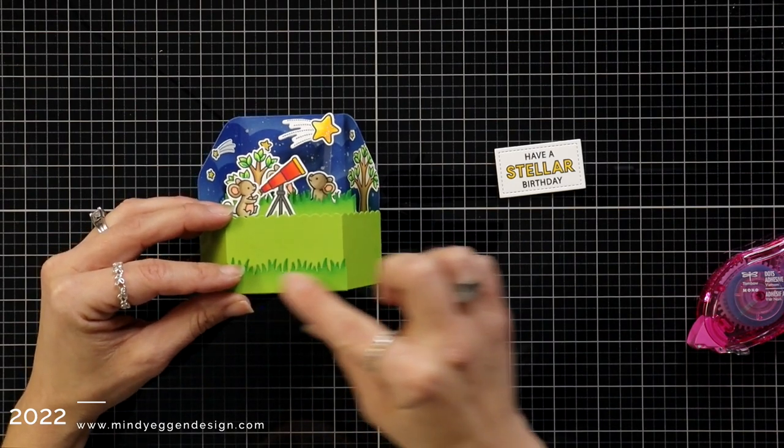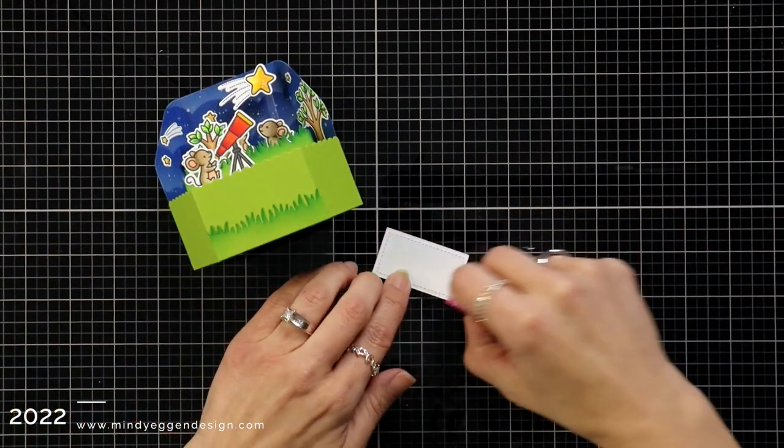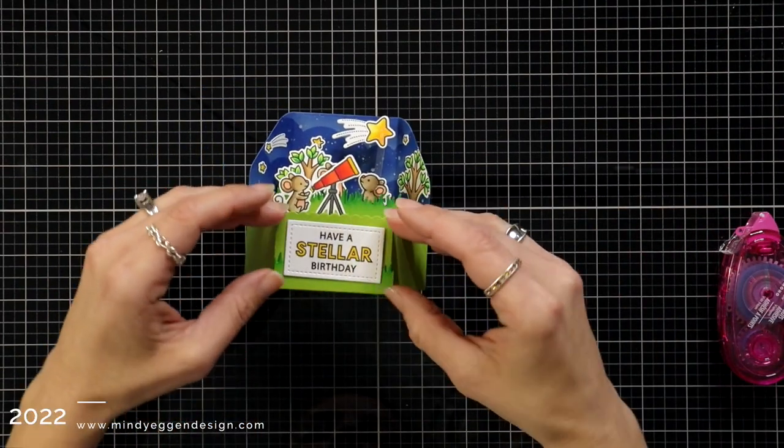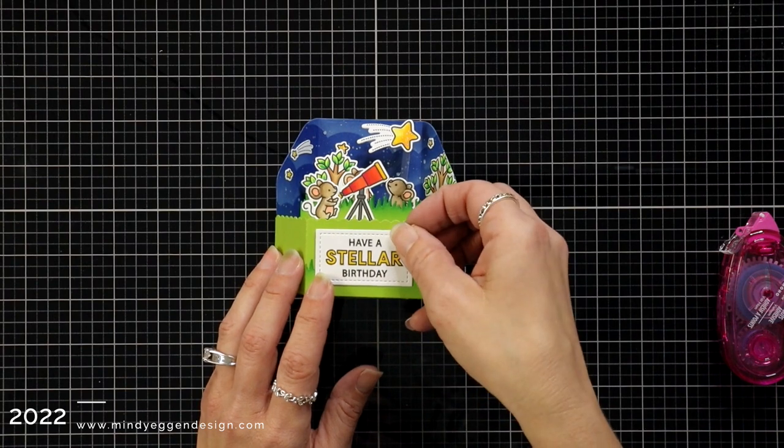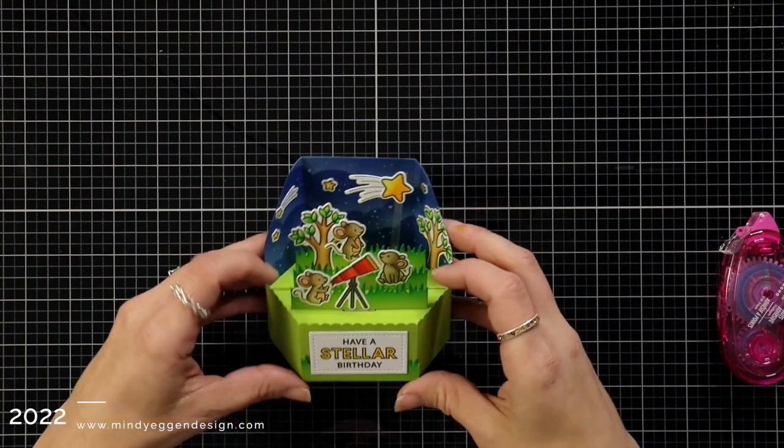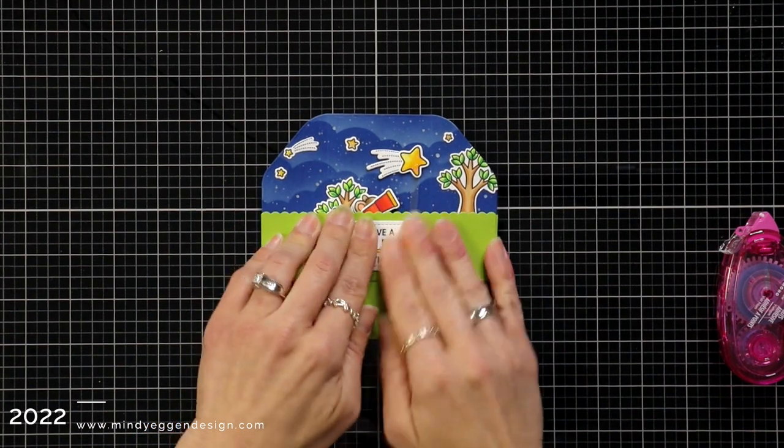This is that extra piece I had die cut and added to the front. I think it's super cute, but then once I added my sentiment with my tape runner, it kind of got covered up. But oh well, I'm leaving it. I added that tape runner and I'm going to just fold this back up so that I can push down that sentiment and it sticks really well to the front.